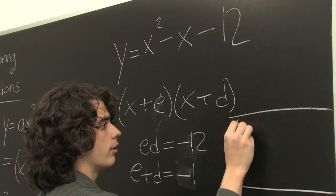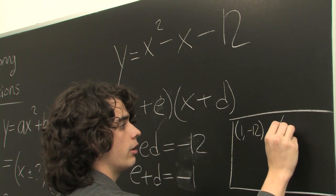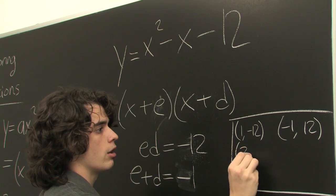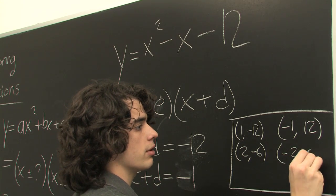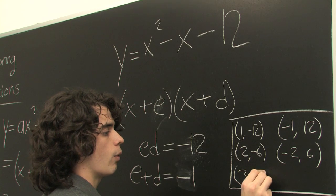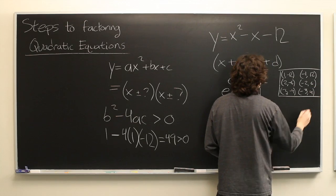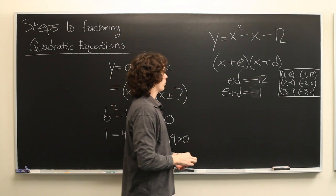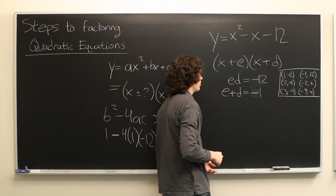We can have 1 and negative 12, and similarly negative 1 and 12. Then 2 and negative 6, and negative 2 and 6. And we have 3 and negative 4, and negative 3 and 4.